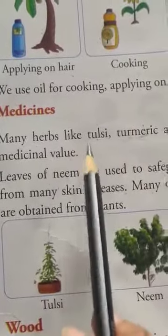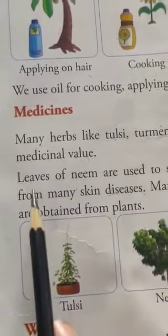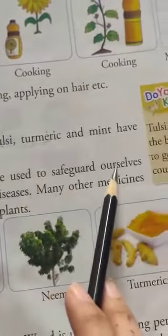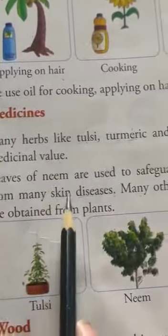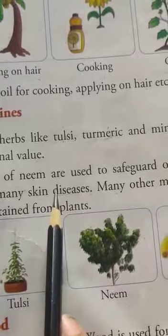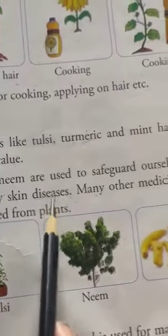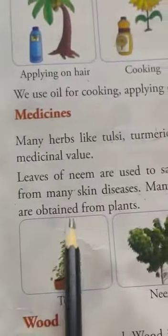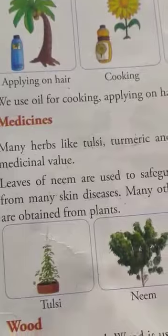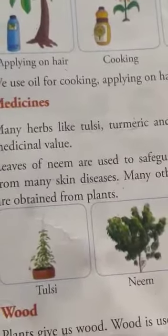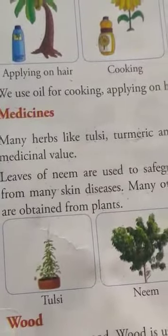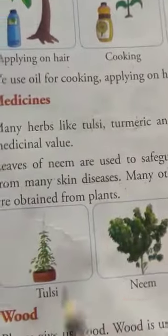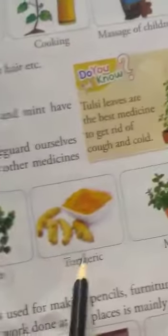Herbs help us — they have some medicinal value in them. Leaves of neem are used to safeguard ourselves from many skin diseases — D-I-S-E-A-S-E-S, diseases. Many other medicines are also obtained from plants. They help us in skin diseases. Diseases means bimari. These include tulsi, neem, turmeric, and mint.